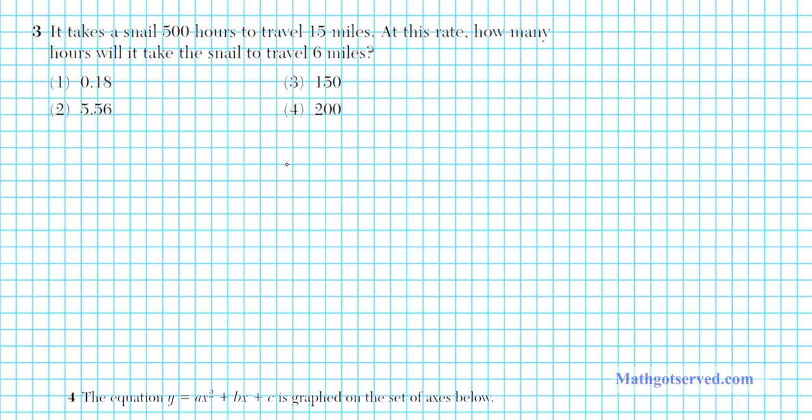To save time, I like to name the numerator what I'm looking for. We're looking for hours. So we'll set up our proportion as hours over miles. The first ratio is 500 hours for 15 miles: 500/15. Since it's going at the same rate, this ratio holds. The next ratio is x, where x is the number of hours.